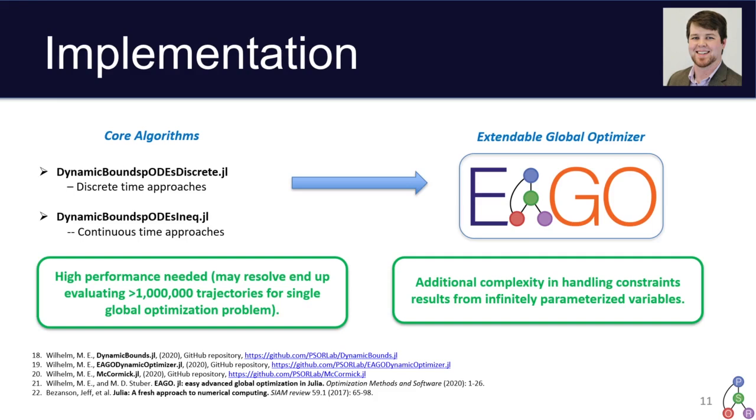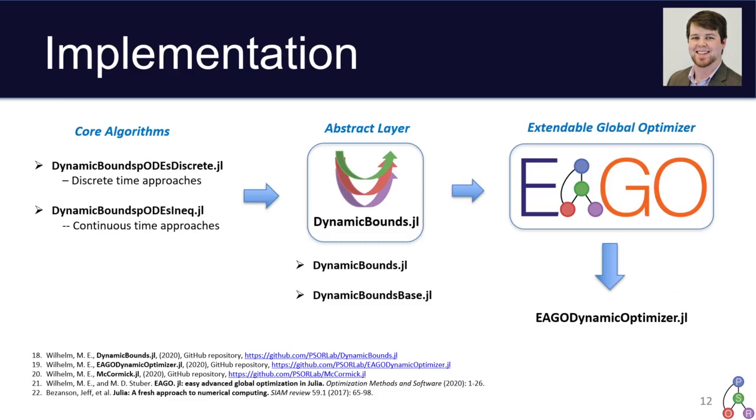Additionally, this may be kind of obvious to some people, but the state variables that are used to define these dynamic problems behave differently than the decision variables in typical optimization formulations. That is, they're parameterized by decision variable usually and time, and that introduces some complexity in how you actually query information relating to these variables. So we've built a couple of these packages which contain various discrete and continuous time approaches for relaxations. We also included this abstraction layer to essentially give us a standardized means of defining problems and querying them that is separate from the core global optimization functionality.